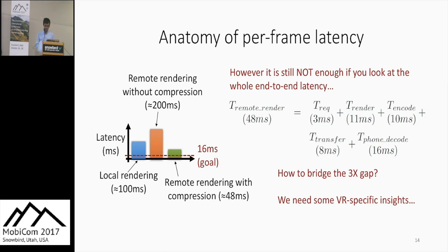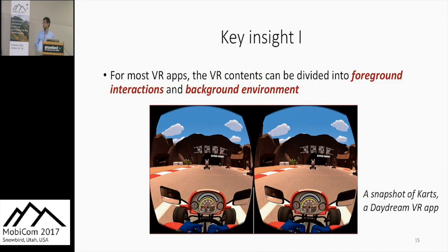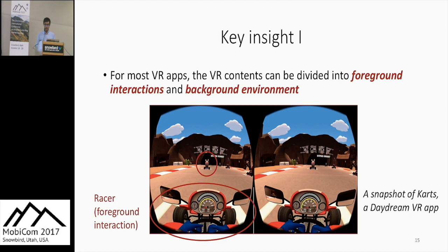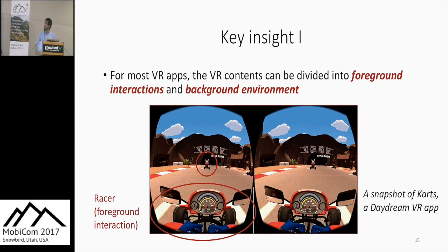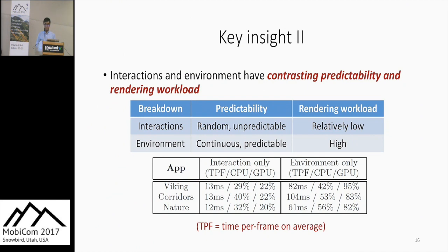After studying more than 100 VR applications on Google Play and the Unity Store, we obtained two VR-specific insights. First, VR contents can be divided into foreground interactions and background environments. Interactions, such as a razor, are triggered by operating the controller, while the background environment, such as clouds and mountains, is updated according to the user's movement. Interactions and environments have contrasting predictability and rendering workloads: foreground interactions are random and hard to predict but much more lightweight, while background environments change continuously, are predictable, and contain rich details and complex textures.